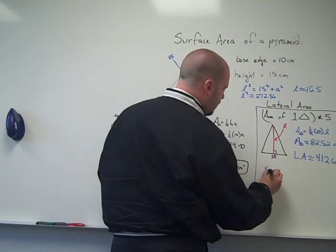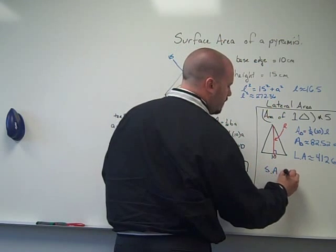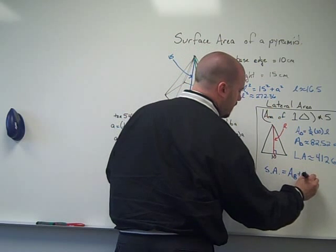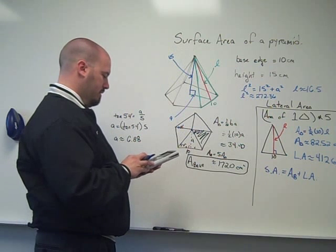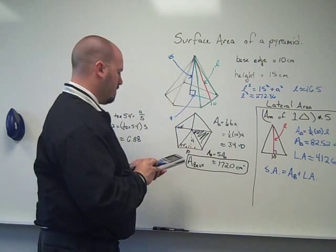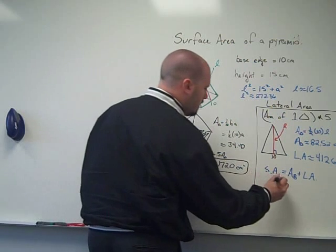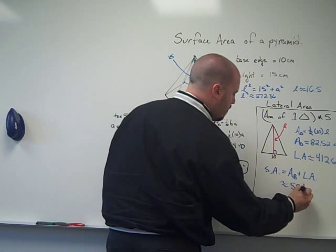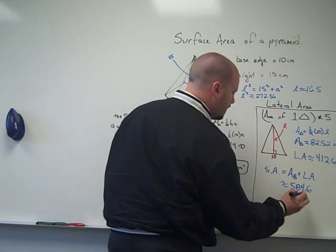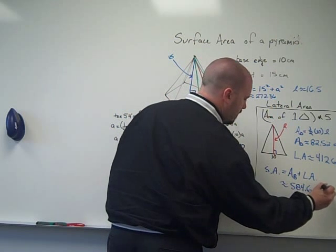So my lateral area is 412.6, and so my total surface area is equal to the area of the base plus the lateral area. I'm going to take my lateral area, and I'm going to add in the area of the base, and that's approximately 584.6 centimeters squared.